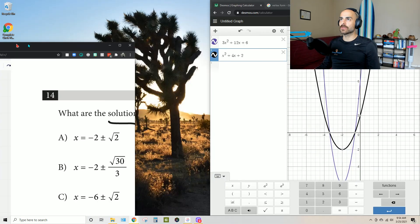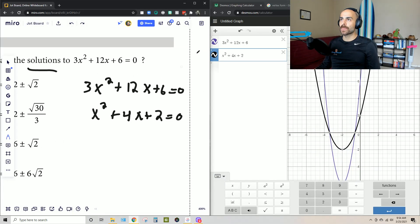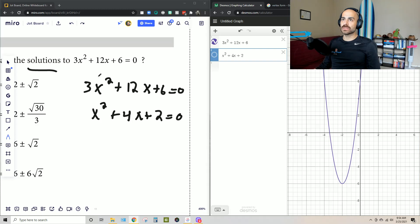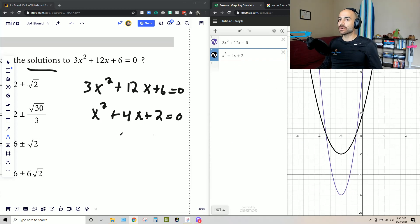Now, when I jump to a graph here of these expressions, this purple graph represents the original one, the 3x² + 12x + 6. And then now, I'm going to be putting in the second expression. Notice how it's a little bit different in terms of how wide it is. Most importantly, the vertex is different.